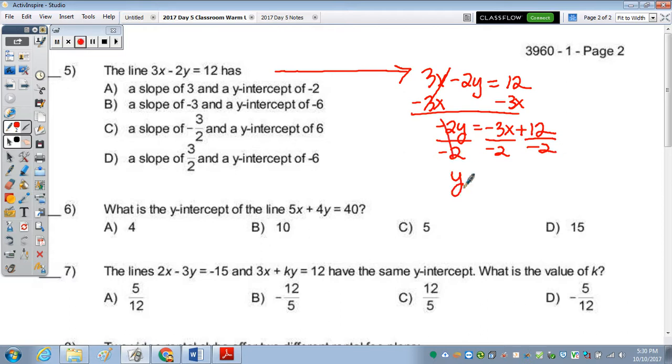We end up with y equals negative over negative is positive. So we have 3 halves x. 12 divided by negative 2 is a negative 6. So the answer, slope of 3 halves and y-intercept of negative 6 is d.